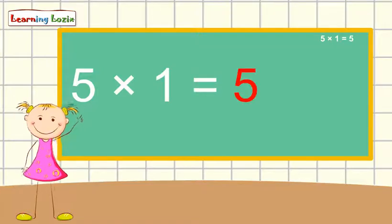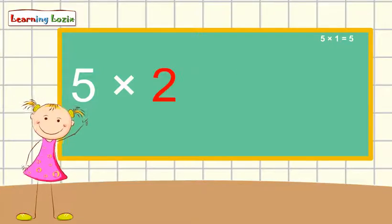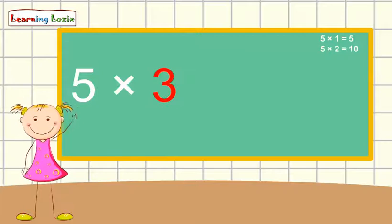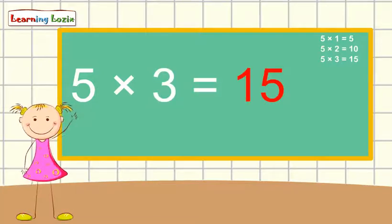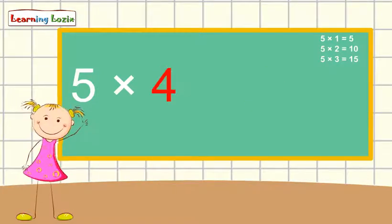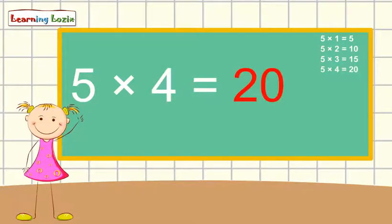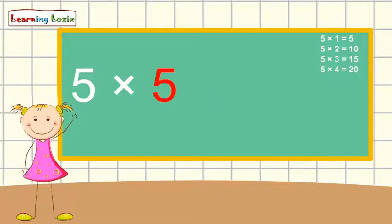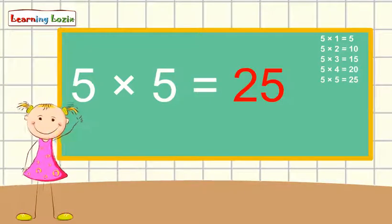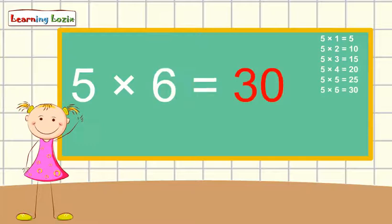five times two is ten, five times three is fifteen, five times four is twenty, five times five is twenty-five, five times six is thirty,